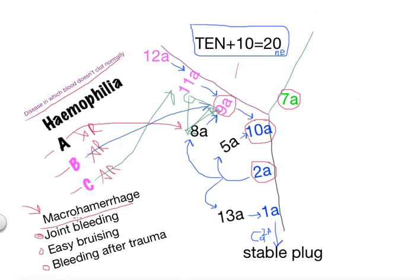What happens in hemophilia is you get macrohemorrhage, joint bleeding, easy bruising, and bleeding after trauma. That means you cannot clot your blood. When you cannot clot your blood, you bleed all the time.